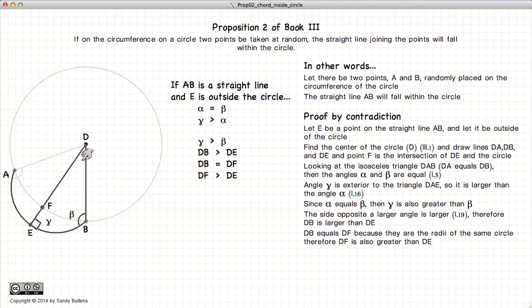So we have DB is greater than DE. But since DB is the radius of the circle, and so is DF, you have DB is equal to DF.